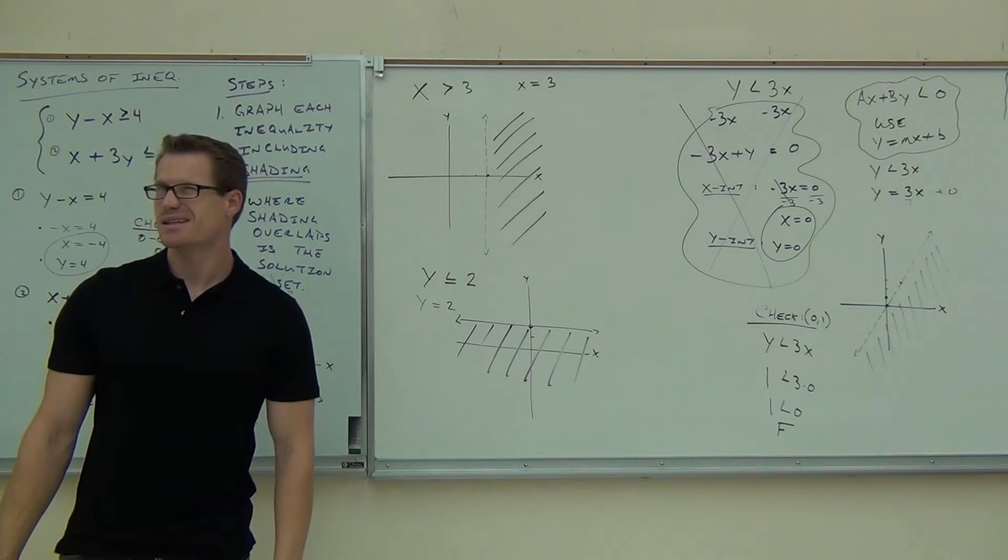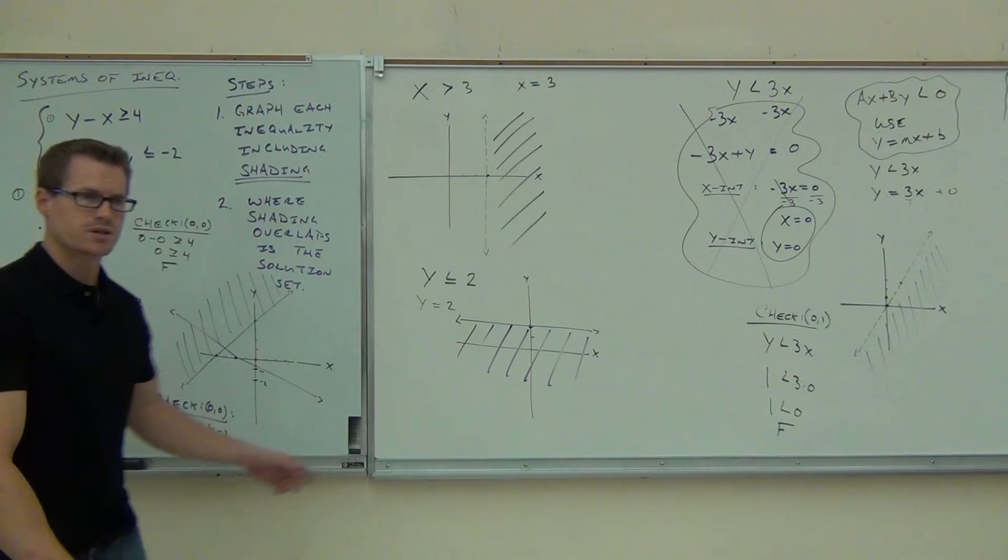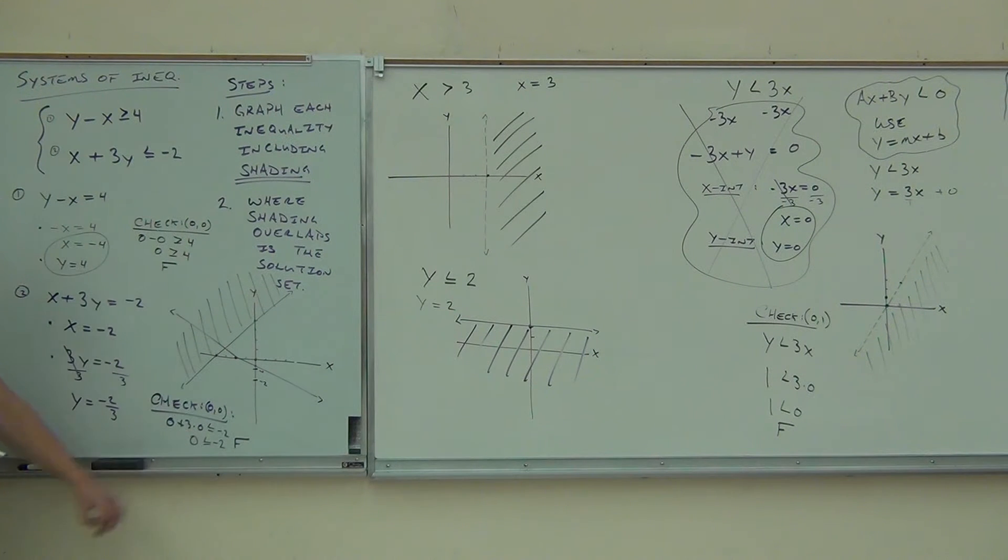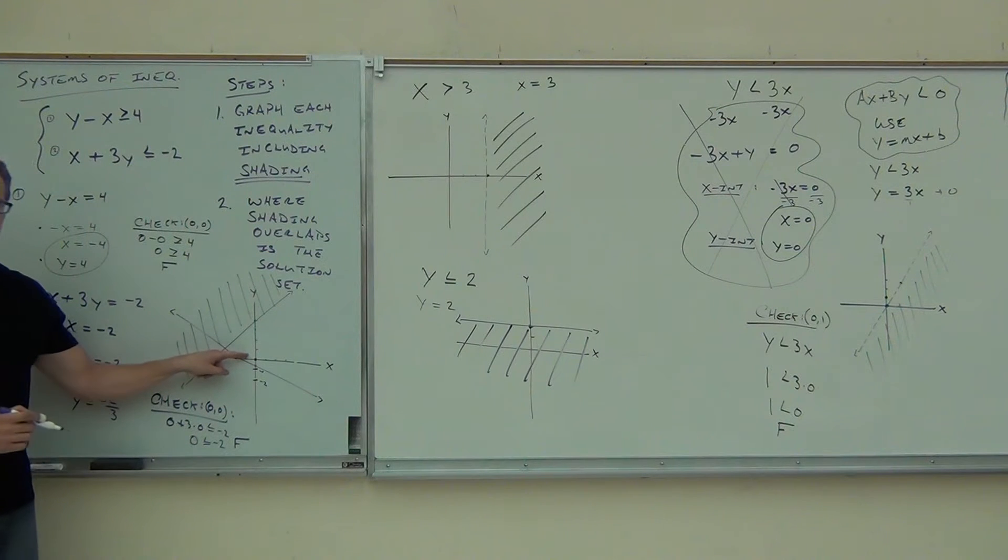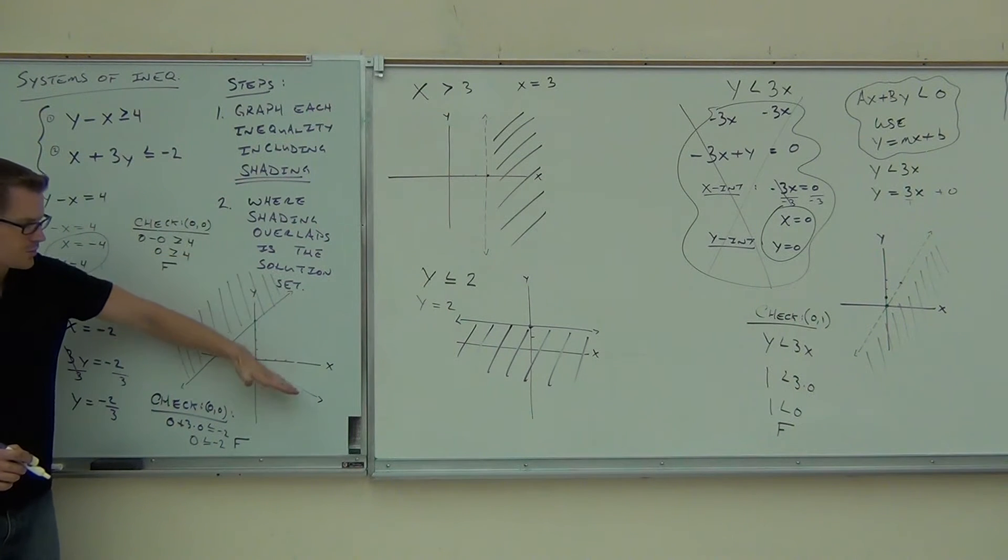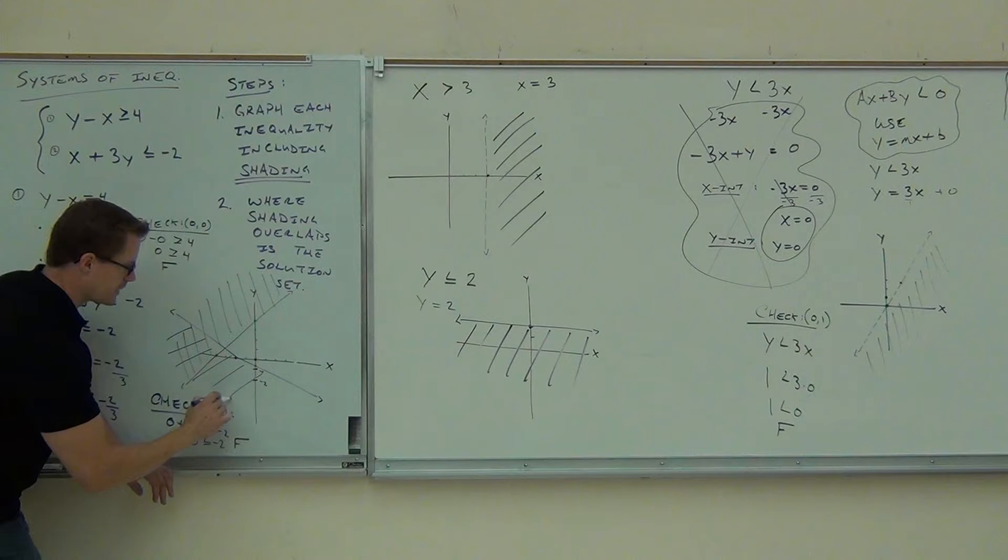Zero is less than negative two? No, I'd rather have no money than owe two dollars, right? That's not true. This is false. Zero is not less than negative two. You still with me, folks? So again, we check this point. Did this point work? No. So we're not going to shade. We're ignoring this black shading. Just the purple line. Are we going to shade the top half or the bottom half? Definitely the bottom. This side was false. This side has to be true. So we shade all of that stuff.